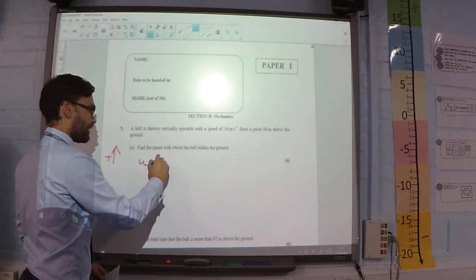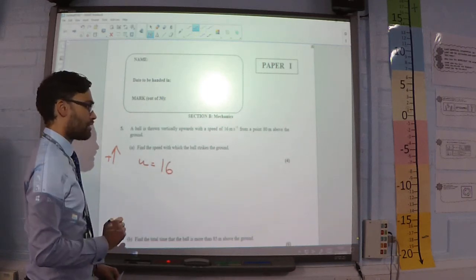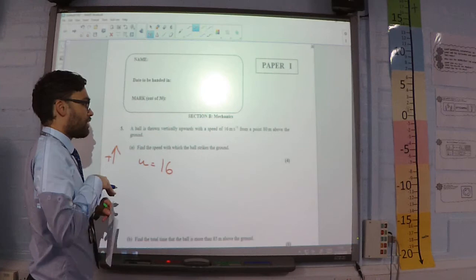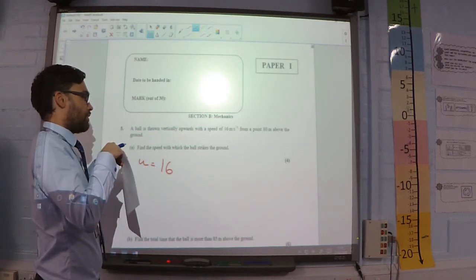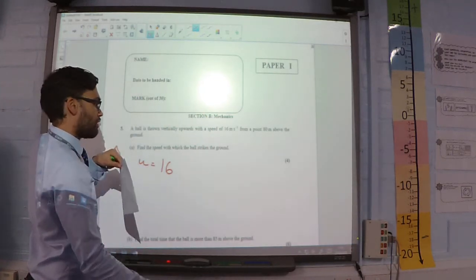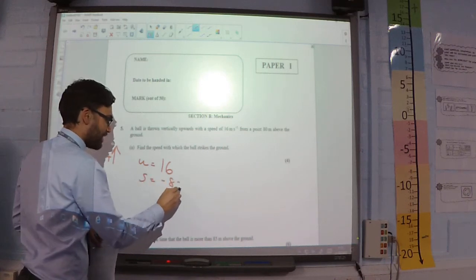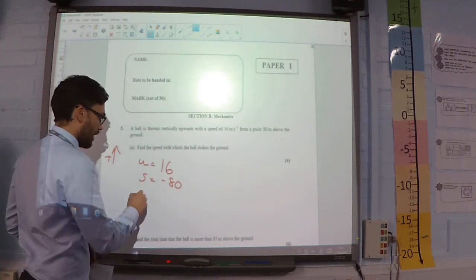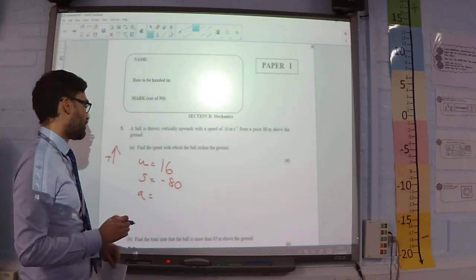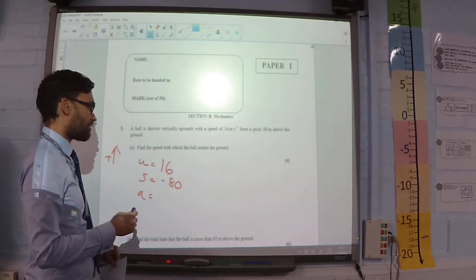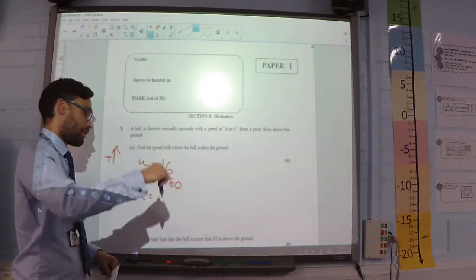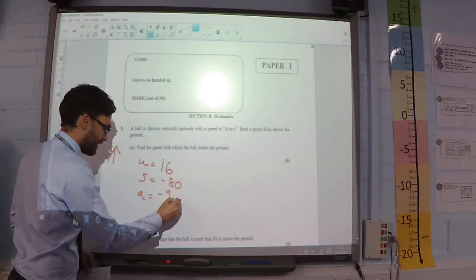My initial velocity is going to be 16 in this case. I start 80 meters above the ground. Now, if I'm hitting the ground, that means my displacement from my start point is going to be negative 80. And this is just going to be using gravity for acceleration. We're actually working downwards in this case, so that's going to be negative 9.8.